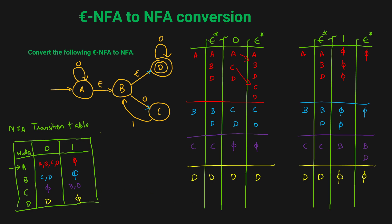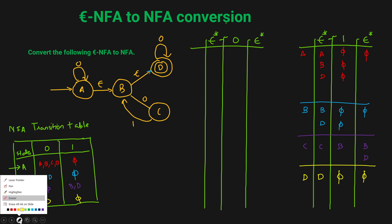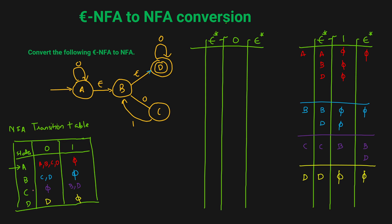This is how we convert ENFA to NFA. Now we'll construct the NFA. We have four states. We also need to check for final states. State D is our final state in the original ENFA. But we also need to mark any state that can reach state D by Epsilon. State A can reach D via Epsilon, so state A is also a final state. State B can also reach state D via Epsilon, so state B is also a final state. So states A, B, and D are all final states.